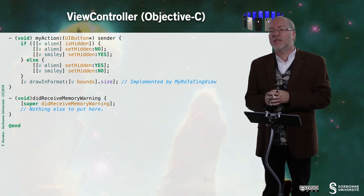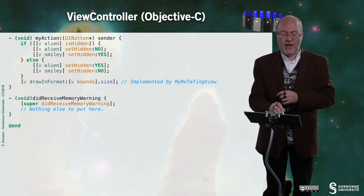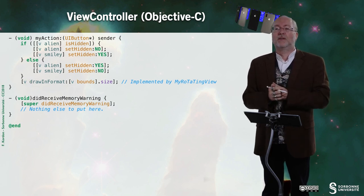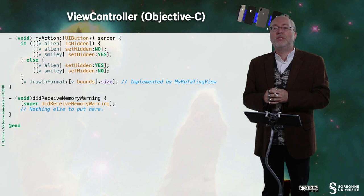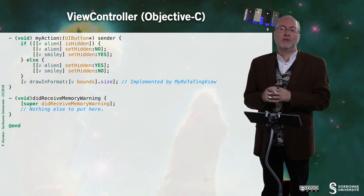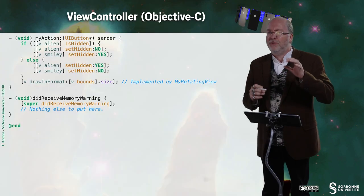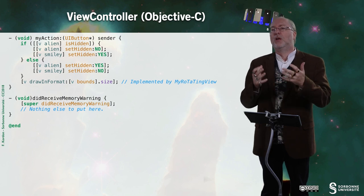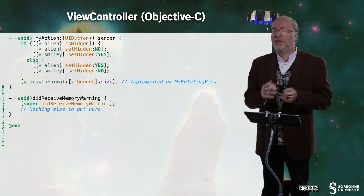In viewWillTransitionToSize, I invoke drawInFormat with the size passed as a parameter. There is nothing really to put in didReceiveMemoryWarning because we don't use that much memory. We could release V, but then we'd need to implement viewWillAppear to ensure V exists and recreate it if necessary.